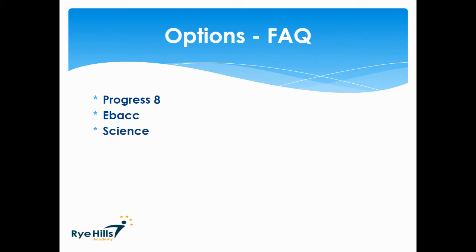Science is often a source of confusion during the options process. Science is compulsory but there are two different science pathways. Trilogy, where students study all three sciences and sit exams in all three but receive two GCSEs. Then there are separate sciences, where each science is studied in more detail and depth and students get three separate GCSEs — one in Biology, one in Chemistry, and one in Physics. The Science department selects the students they feel will be best suited to separate science, and this information is in the email you should have received about the options process.